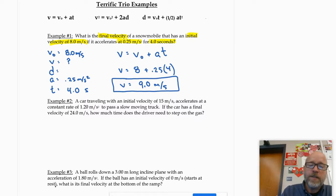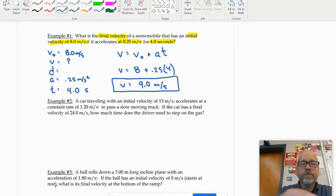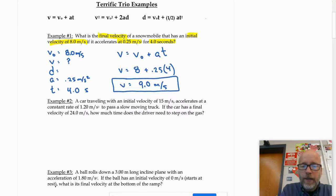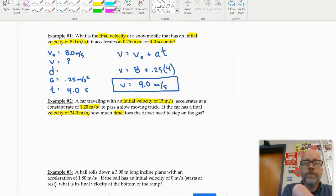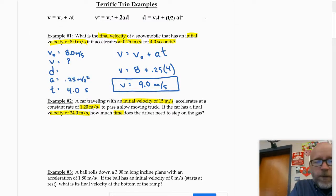Don't get cocky. That's the easiest problem of the year. Number two. It says a car traveling with an initial velocity of 15 meters per second accelerates at a constant rate of 1.2 meters per second squared to pass a slow-moving truck. If the car has a final velocity of 24 meters per second, how much time does the driver step on the gas pedal? All right. So I'm going to go ahead and highlight what I know. If you don't have a highlighter, you just circle it. And I'm looking for time.